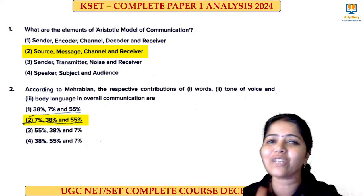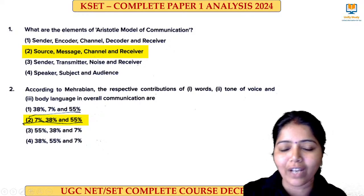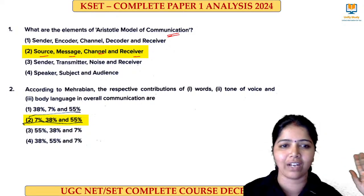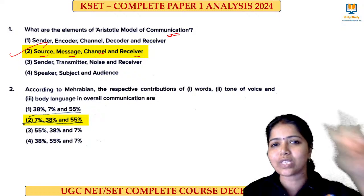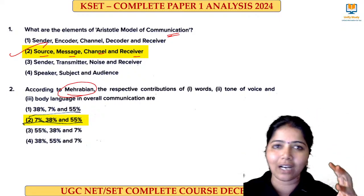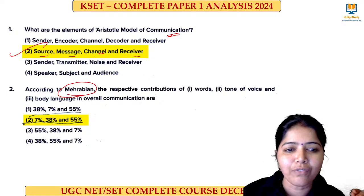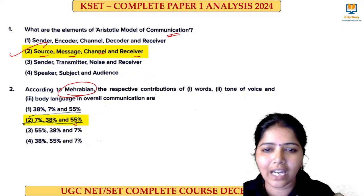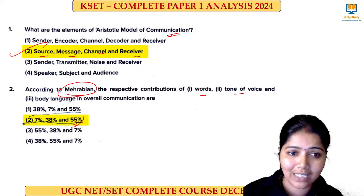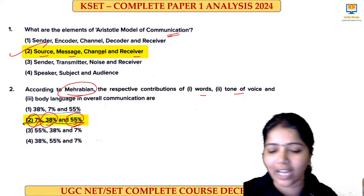Now, I quickly get into the paper analysis of KSET Paper 1. The first question: what are the elements of Aristotle's communication model? The option is source, message, channel and receiver — no noise. So option 2 is the right answer. And next, according to Mehrabian communication, he talks about 7%, 38% and 55%. The right answer: words, tone of voice and body language. Body language plays a very vital role, then tone of voice, then words. Option 2 is the right answer.